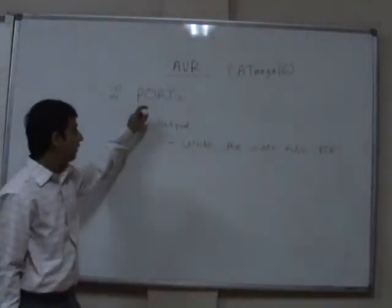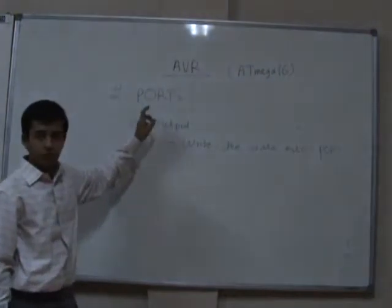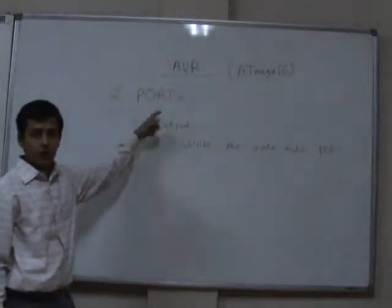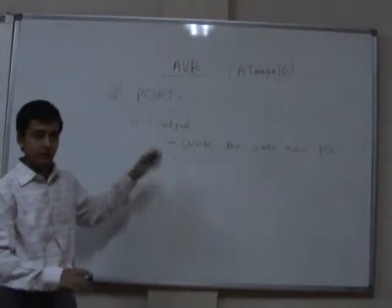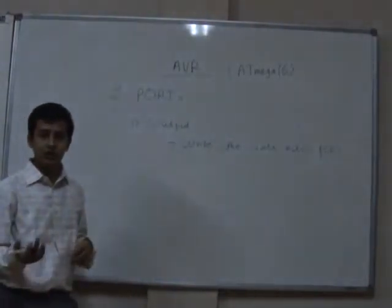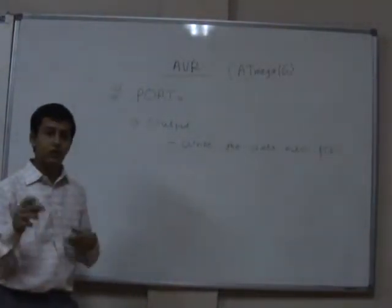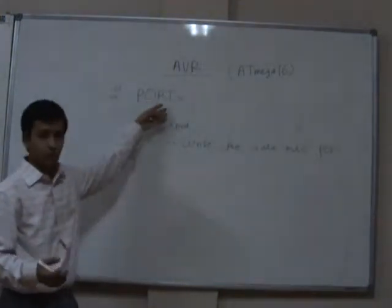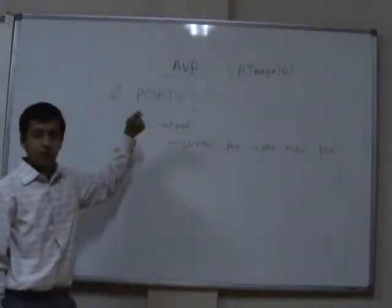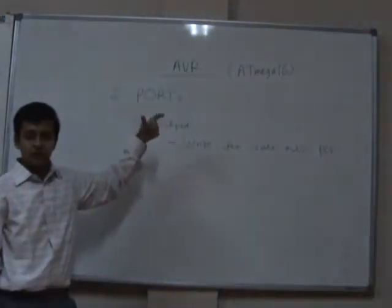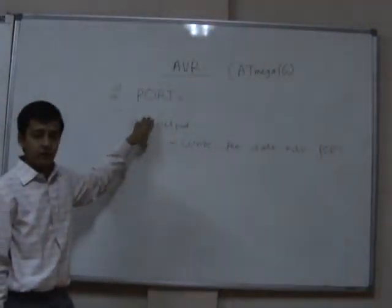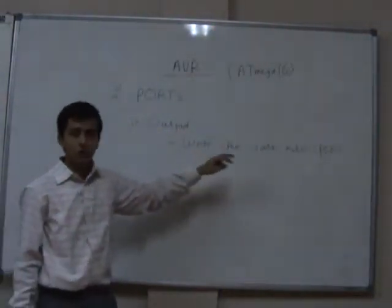Whenever a port is configured as output, the port register — specifically the port A register, to avoid confusion — is used to write data onto the port. Whenever we configure a port as an output port, the port A register is used to write data onto the port.